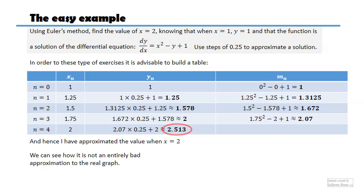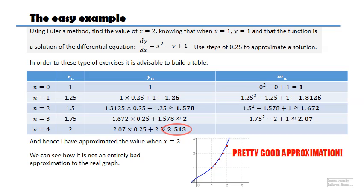This approximated value when x equals 2 is y equals 2.513. It's not a bad approximation — the blue line is the actual graph of the solution to this differential equation through that point, and the red dots are my approximations. They follow the solution pretty closely, just slightly underneath. Euler's method is a good way of estimating the value just by building this table. A way to make a better approximation is to start from closer or take smaller steps.